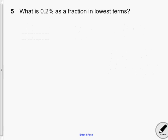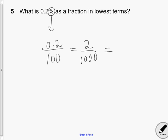Your next question. What is 0.2% as a fraction in lowest terms? So because it's a percentage, we know that as a fraction it's going to be out of 100. So 0.2 out of 100 would be 0.2%. But as an equivalent fraction, we would have it as 2 out of 1,000. But that's not lowest terms. In lowest terms, we would have 1 out of 500.